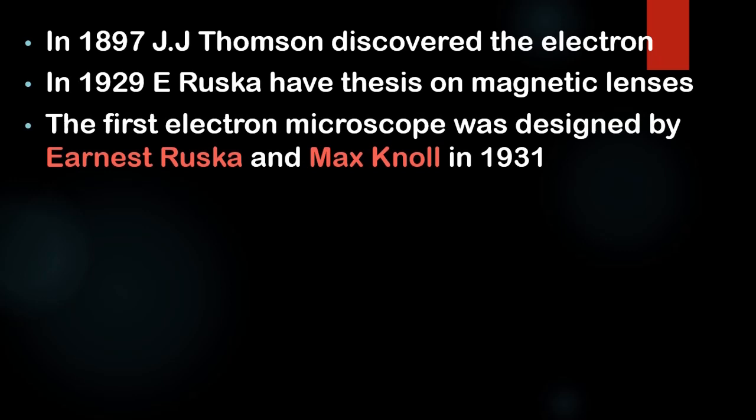J.J. Thomson discovered the electron in 1897, and in 1929 Ernest Ruska wrote his thesis on magnetic lenses. After these two discoveries, the first electron microscope was designed by Ernest Ruska and Max Knoll in 1931.